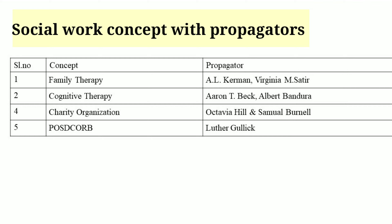Hello everyone, welcome back to the channel. Today we are going to check the list of social work concepts with their propagators. First one: family therapy by Ackerman and Virginia Satir. Second one: cognitive therapy by Aaron T. Beck and Albert Bandura. Charity Organization Society — propagators are Octavia Hill and Samuel Barnett.